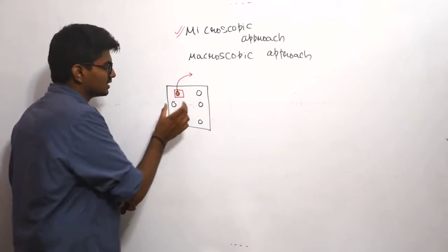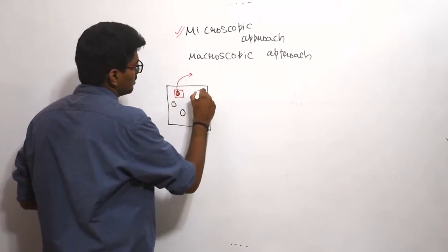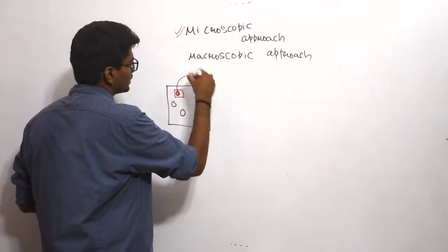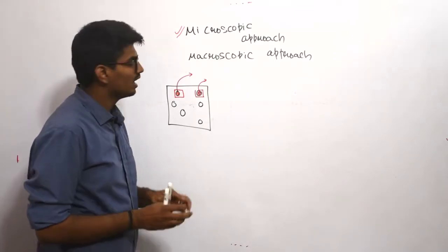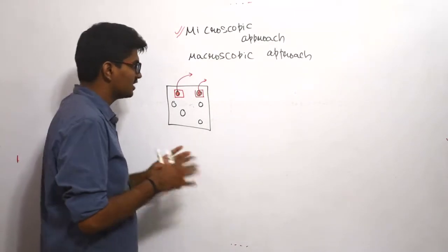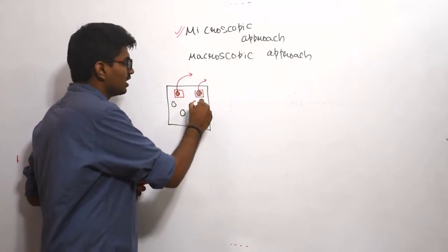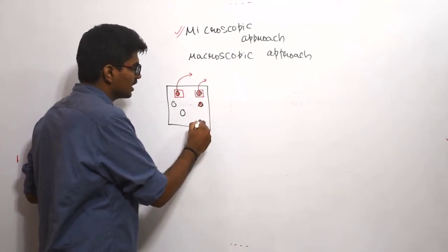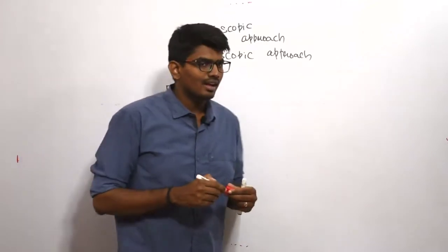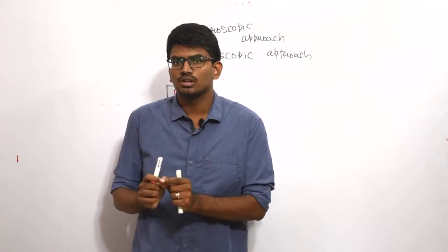Once the analysis of one particular molecule is over, we will go for the next molecule. We will fix another molecule and then do analysis on it — finding properties, behaviors, work transfer, heat transfer, everything. Every analysis will be done with respect to each and every molecule, finishing off each one and then moving towards the next. In this way, a complete gas or fluid analysis is done by choosing each and every molecule.